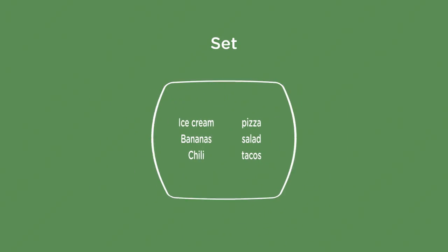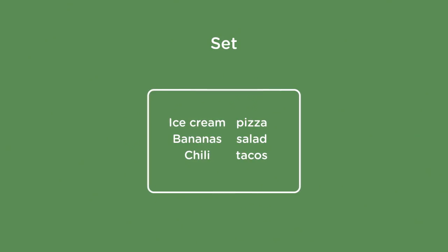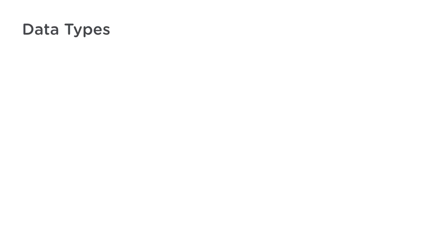Sometimes you need a list of things to pick up at the store, or maybe you need to hold on to different attributes and their values for a player in your game. Python has four major data types for these types of collections: lists, tuples, dictionaries, and sets.